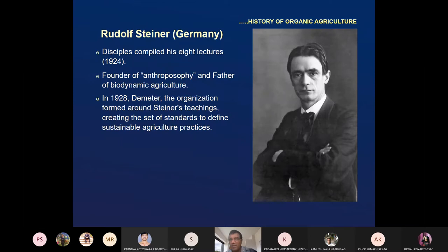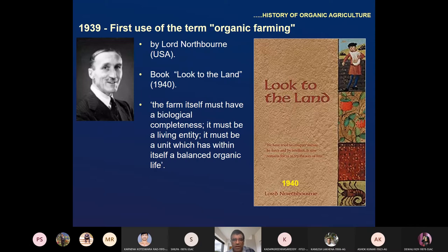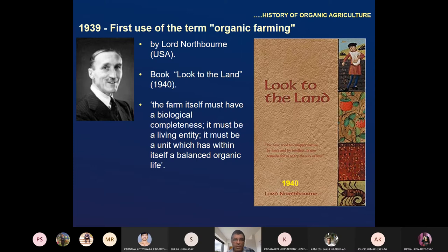Rudolf Steiner was a proponent of organic farming, and the kind he promoted was biodynamic agriculture. In 1939, Lord Northbourne from the USA wrote a book called 'Look to the Land,' stating that the farm itself must have biological completeness — everything should be prepared on the farm, as it is a living entity. He gave emphasis on soil biology and balanced organic life. If somebody asks who gave the term 'organic farming' first, the answer is Lord Northbourne, USA, 1939.